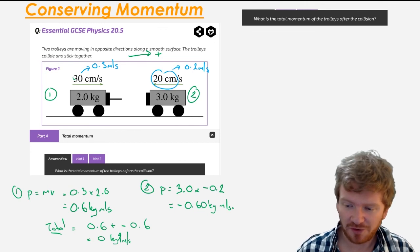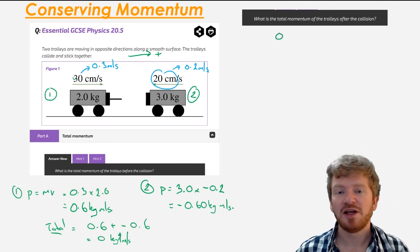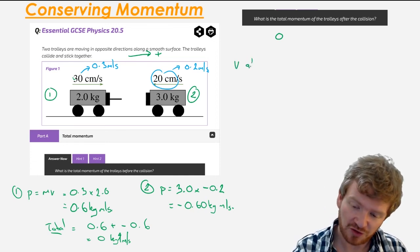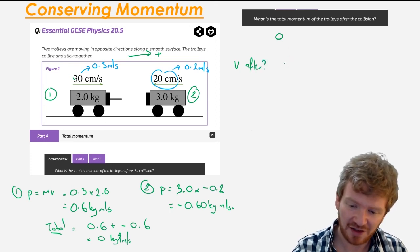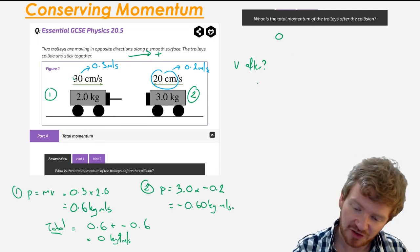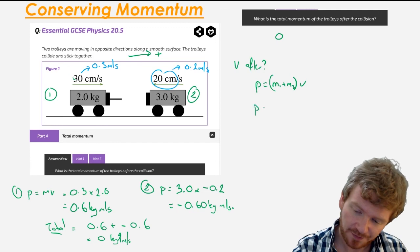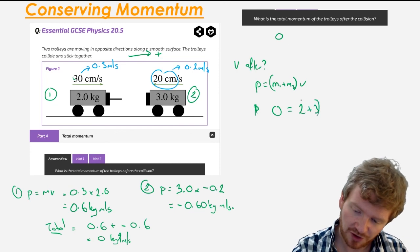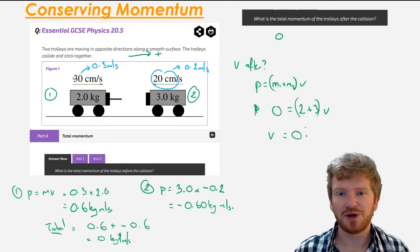What's the total momentum after the collision? Well, that will also be 0. Because remember, in all things, momentum is always conserved. So they might ask, what is the velocity after? Well, I know that if they stick together, then I can say that momentum is m1 plus m2, because they've stuck together, times their new velocity. A momentum of 0 will equal 2 plus 3 times the new velocity. So the new velocity will equal 0 as well. Here's another example of how you can solve some of these problems.